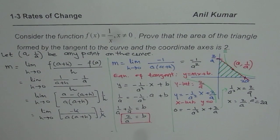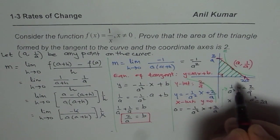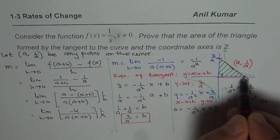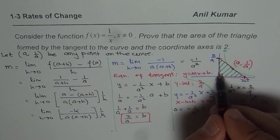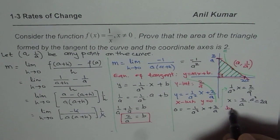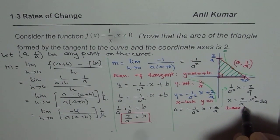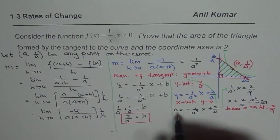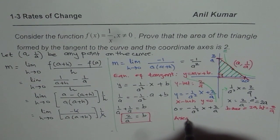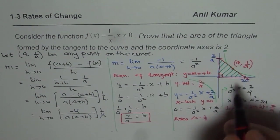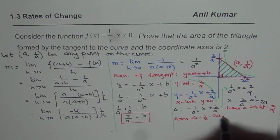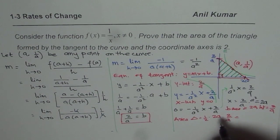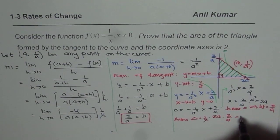Now we know the x-intercept is 2a and the y-intercept is 2/a. For this right triangle, the base is 2a and the height is 2/a. Area of the triangle = ½ × base × height = ½ × 2a × (2/a). The 2s and the a's cancel, giving us area = 2.